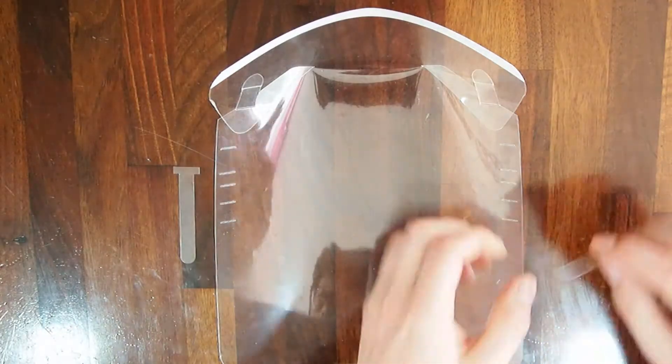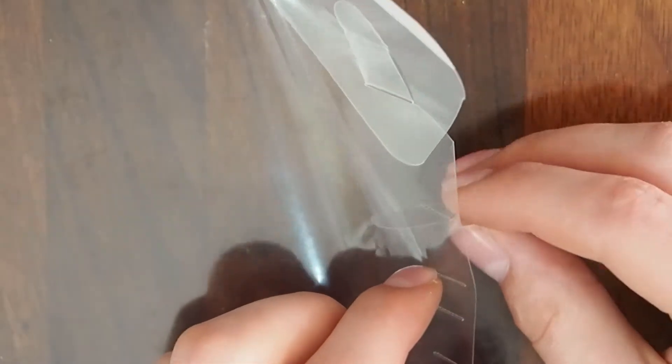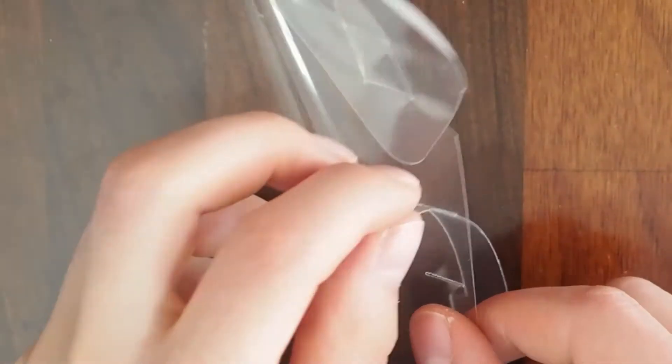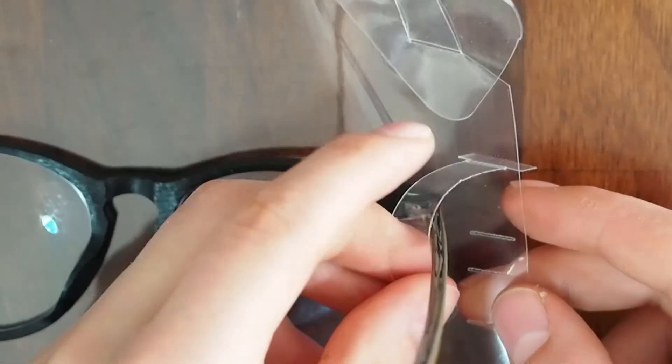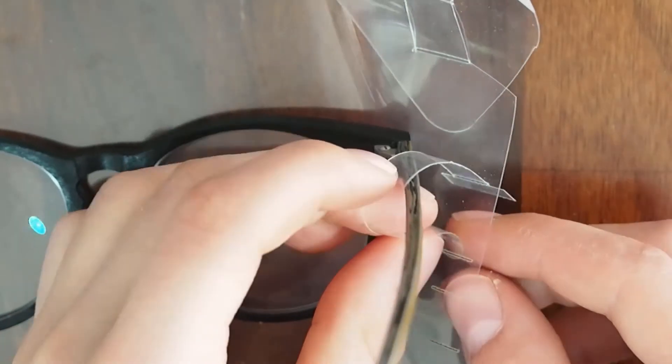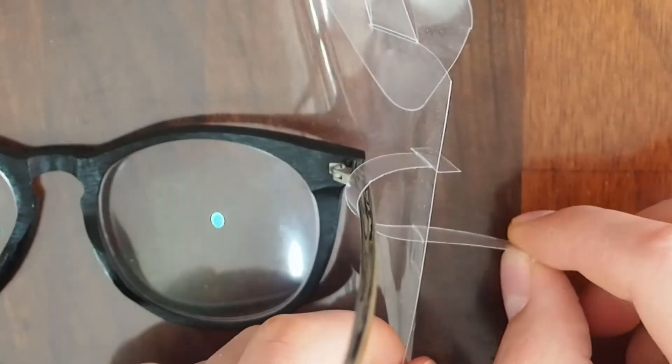Then, take one of the tags removed earlier and feed it from the outside in through the top slot. Take your glasses and lay them on top of the shield and wrap the tag around the arm of your glasses, and feed it through the next slot down.